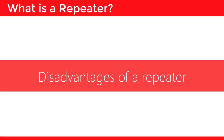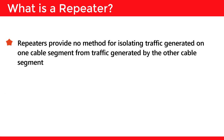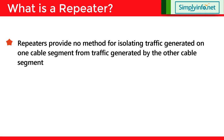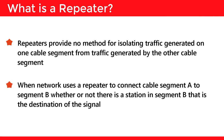Disadvantages of a repeater: Repeaters provide no method for isolating traffic generated on one cable segment from traffic generated by the other cable segment. When a network uses a repeater to connect cable segment A to cable segment B, the signal is retransmitted regardless of whether or not there is a station in segment B that is the destination of the signal.